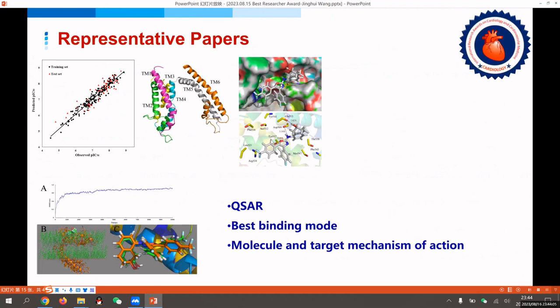We first use the homology modeling method to construct the three-dimensional structure of the receptor, and then construct a mathematical model based on the ligand and receptor respectively.